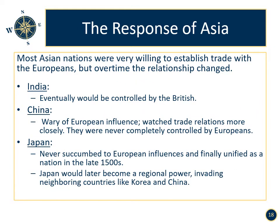The response of Asia. Most Asian nations were very willing to establish trade with the Europeans, but over time the relationship changed. Within India, the British eventually controlled the region. China, wary of European influence, watched trade relations more closely and was never completely controlled by Europeans. Japan never succumbed to European influences and finally unified as a nation in the late 1500s. Japan would later become a regional power, invading neighboring countries like Korea and China.